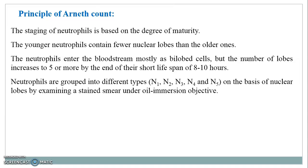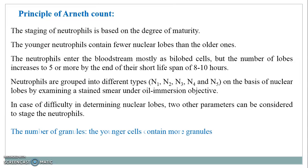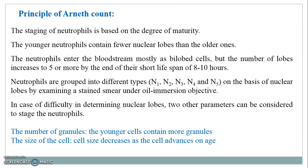Neutrophils are grouped into types N1 through N5 on the basis of nuclear lobes by examining a stained smear under oil immersion objective. In case of difficulty in determining nuclear lobes, two other parameters can also be considered: the number of granules — younger cells contain more granules — and the size of the cell, which decreases as the cell advances in age.